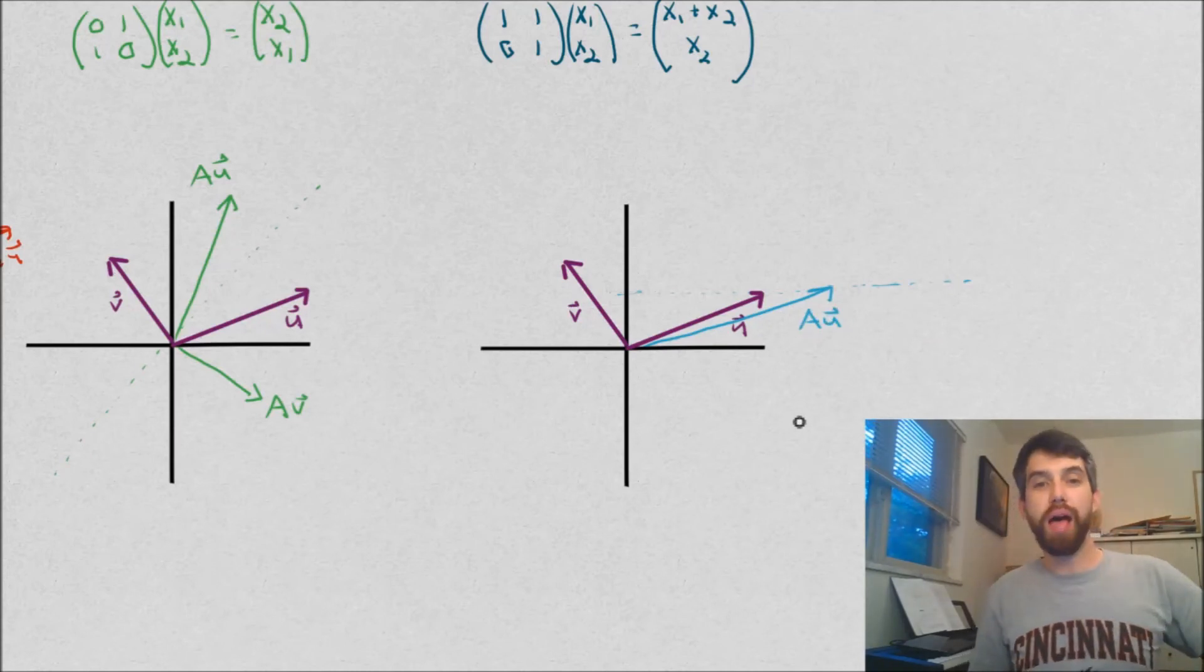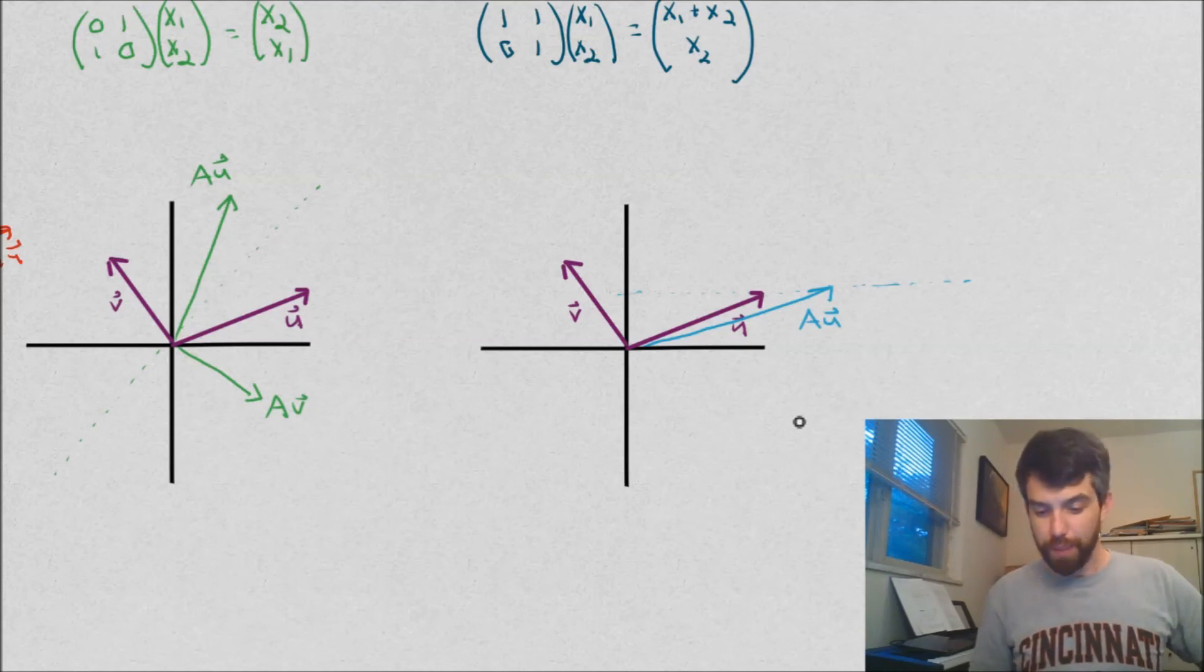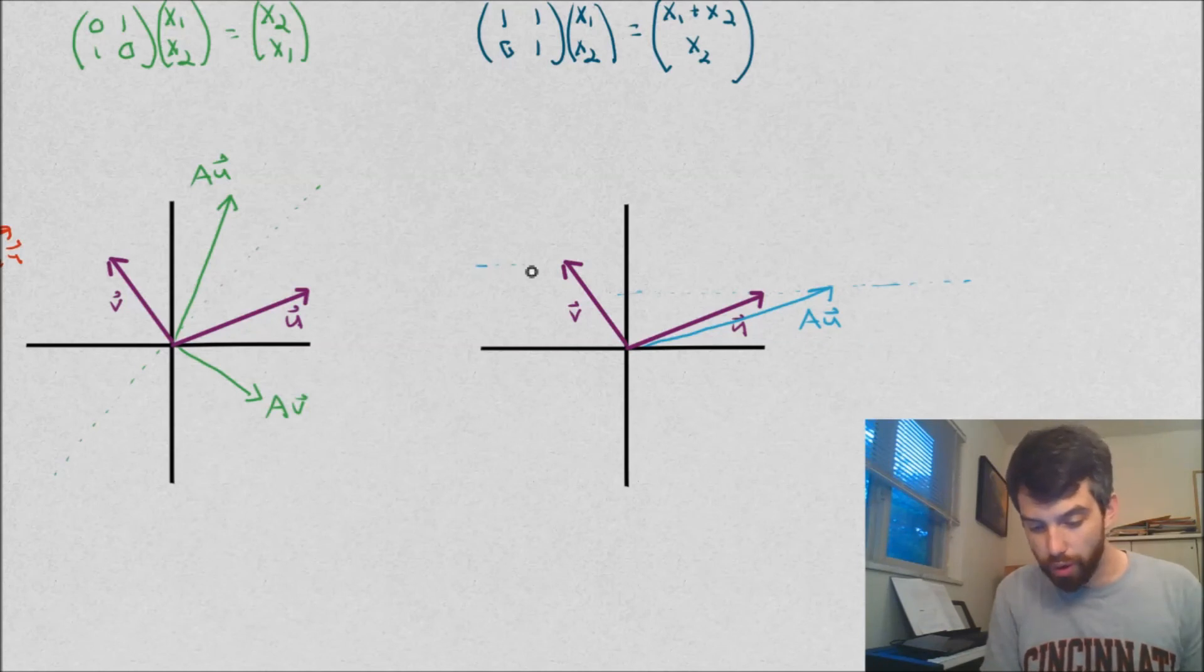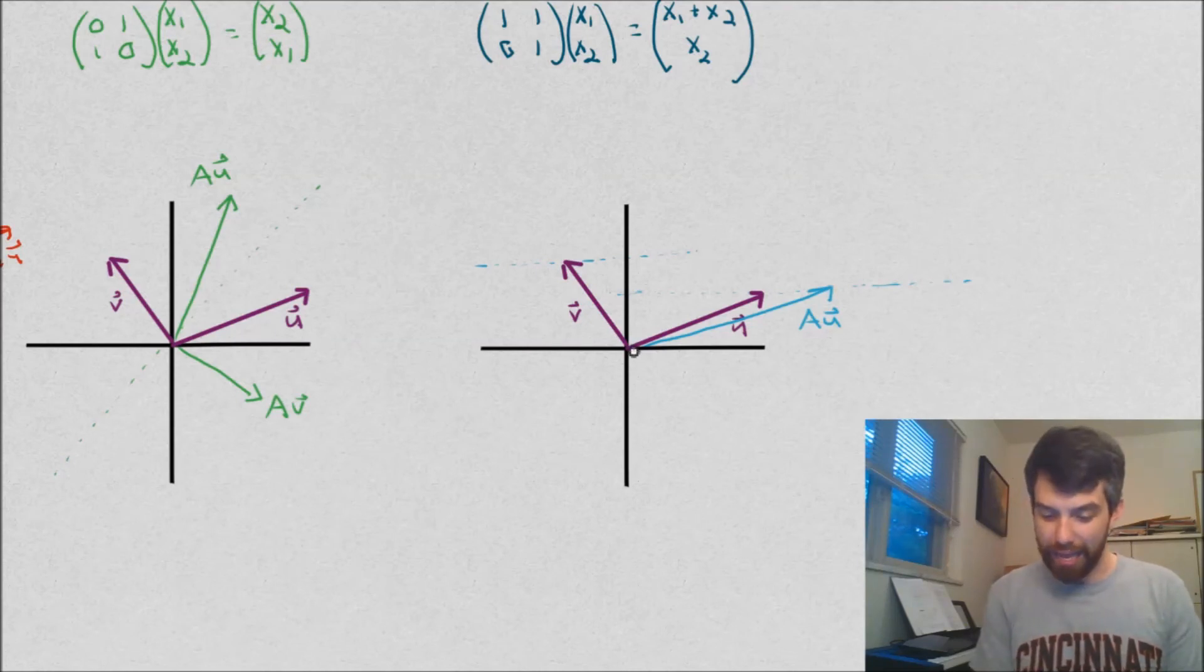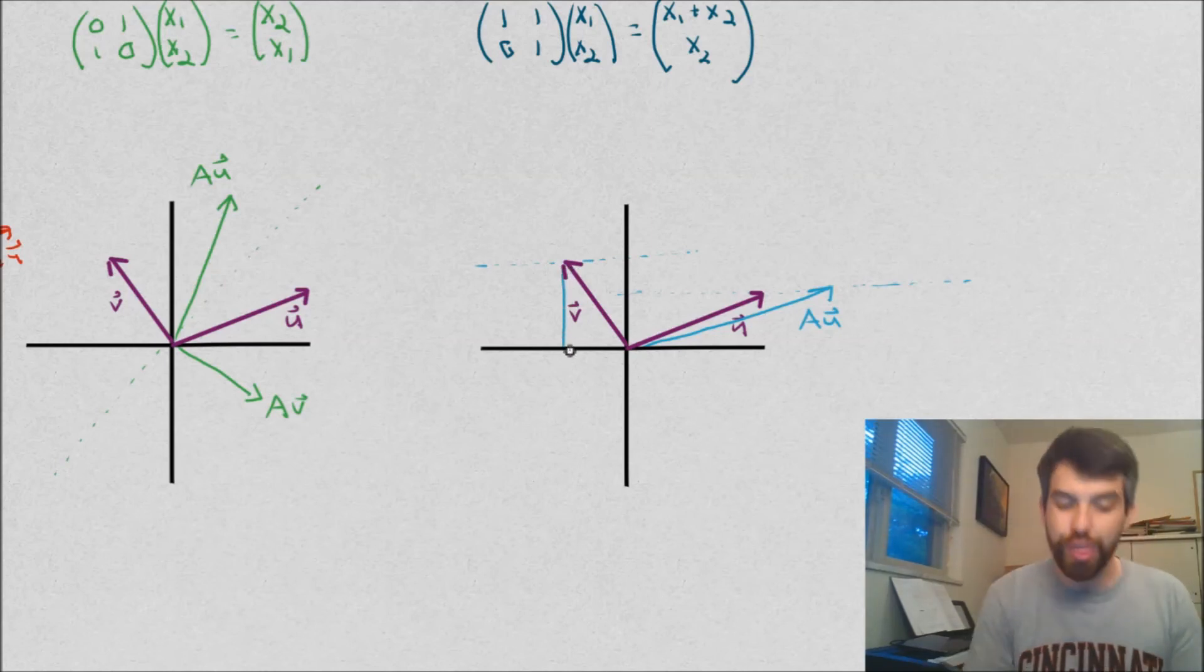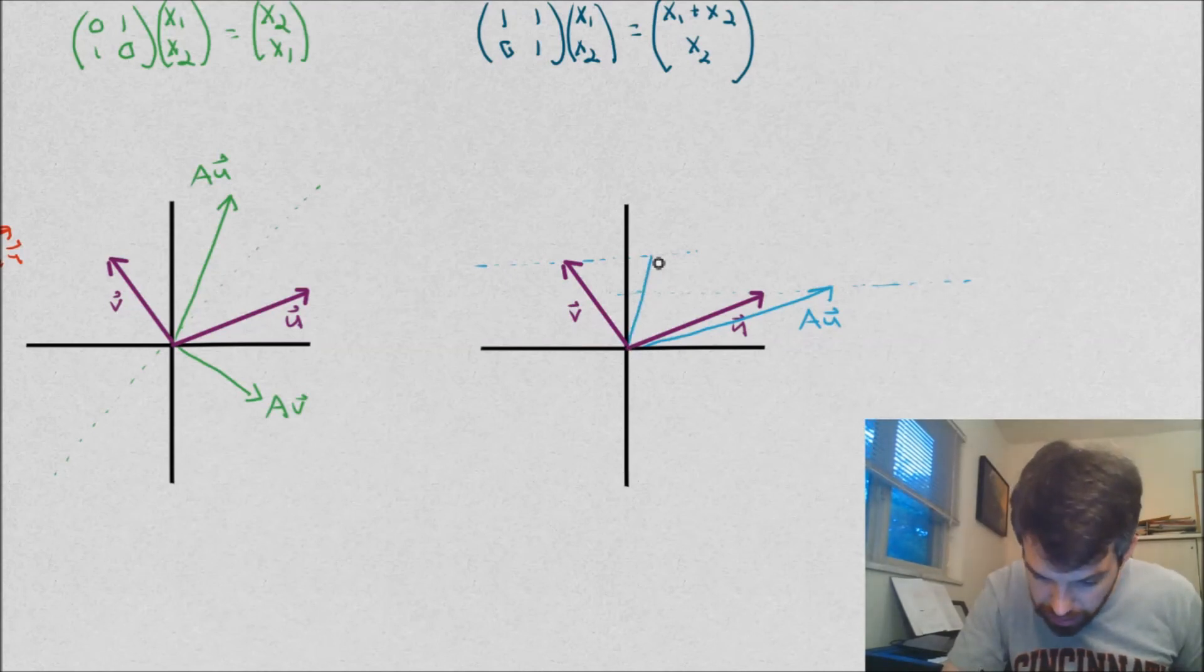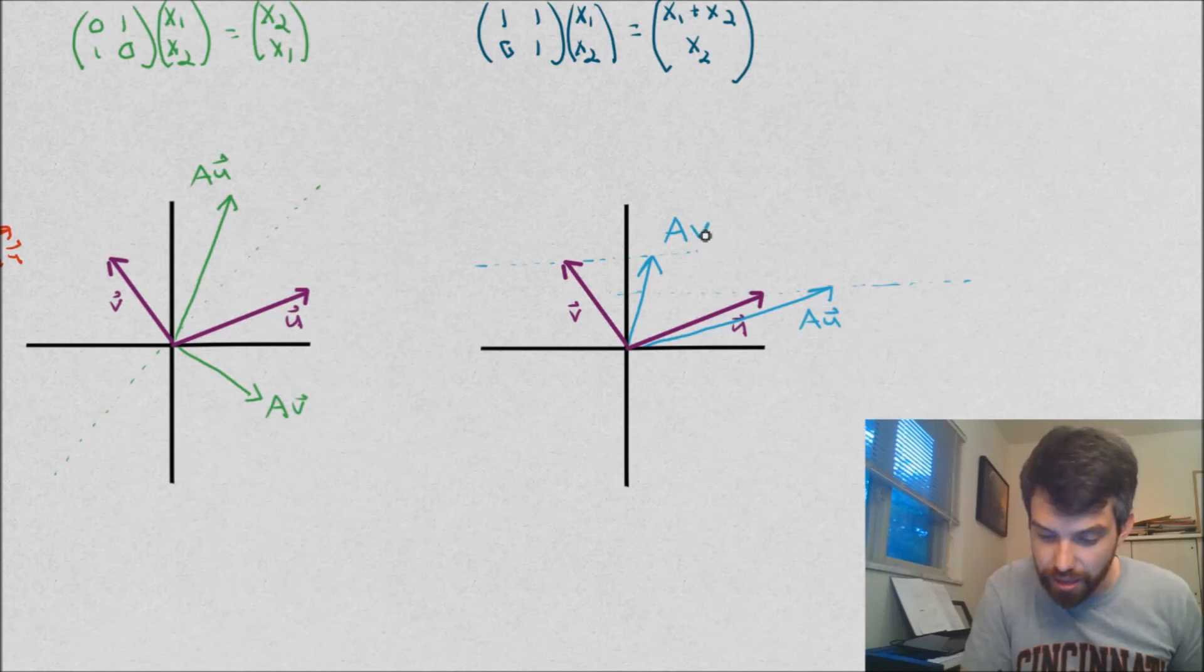And then if I look at my v here, well, what we're going to do in this one is we're going to keep it the same sort of horizontal. So it's going to be somewhere along this line going along up here. But then where does it go to? It goes to the x1 component it has here, but then it adds to it the x2. It adds to it that height there, which is a positive amount. And so I think it's going to become a vector that looks something like that. That's my Av.